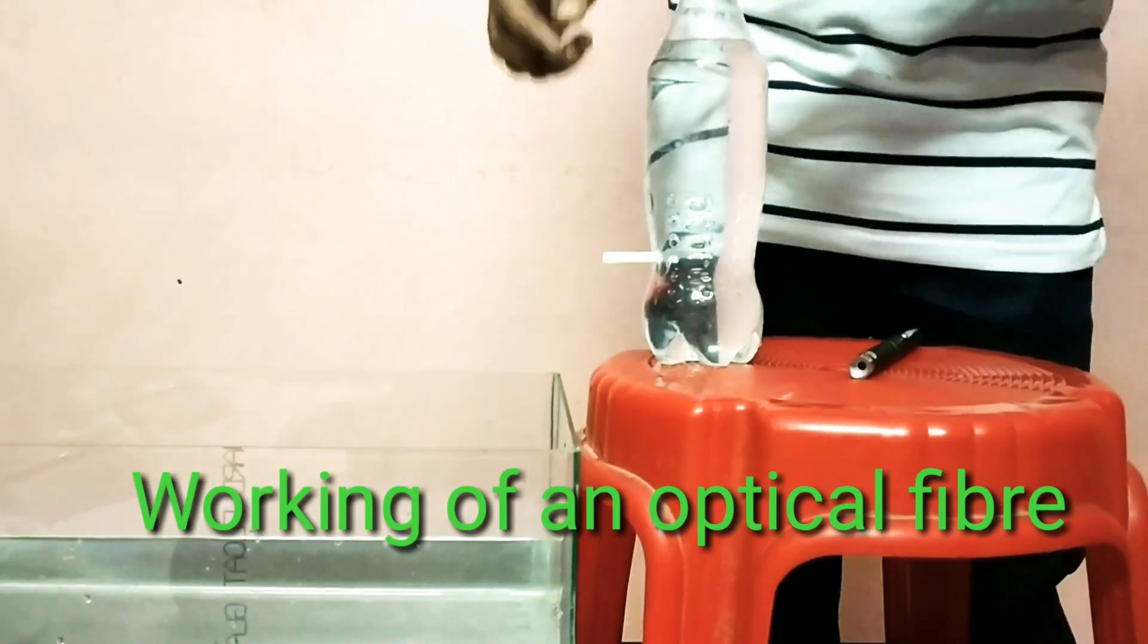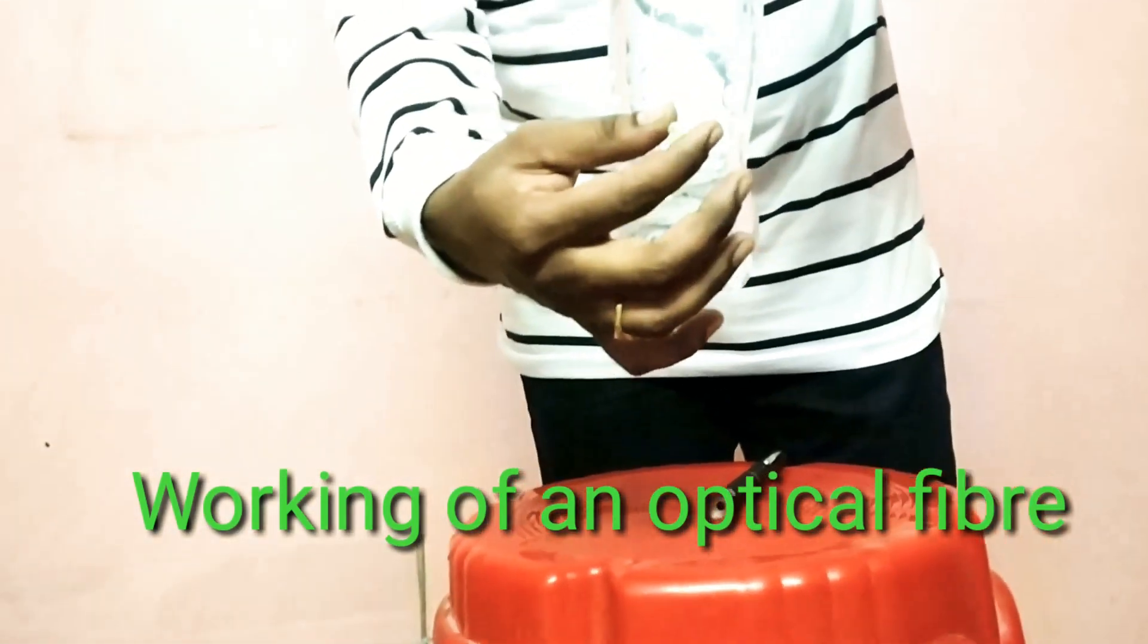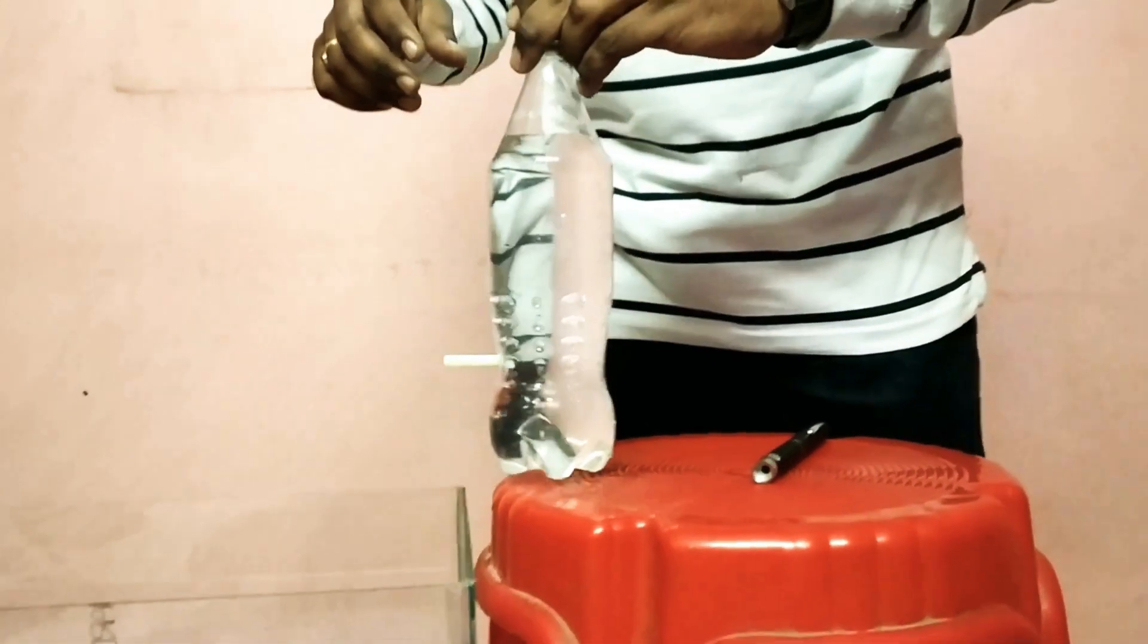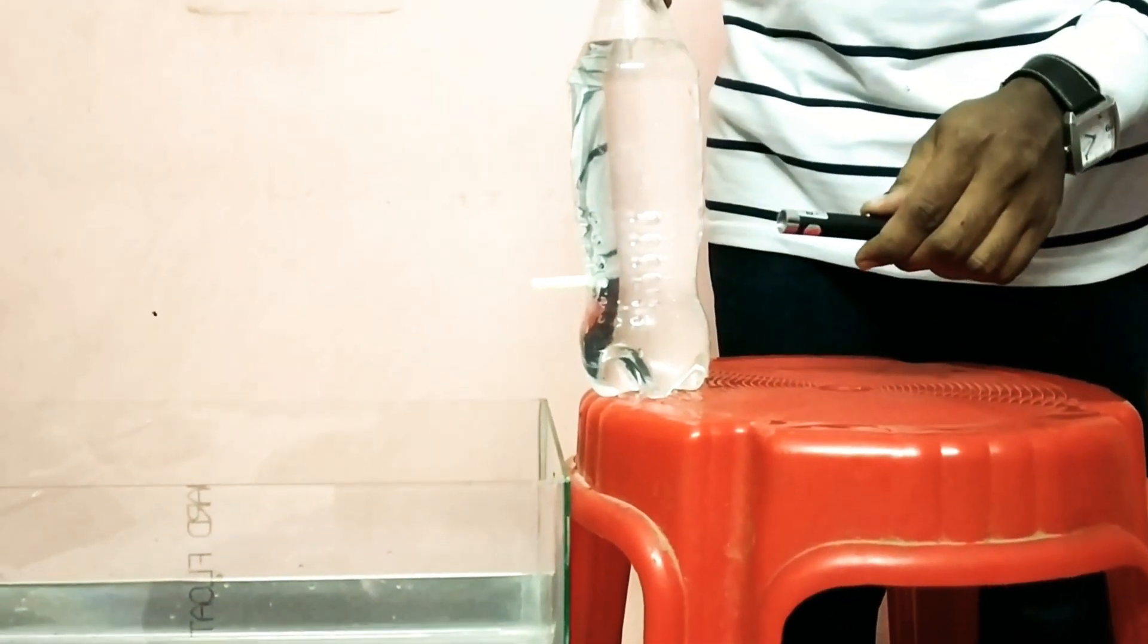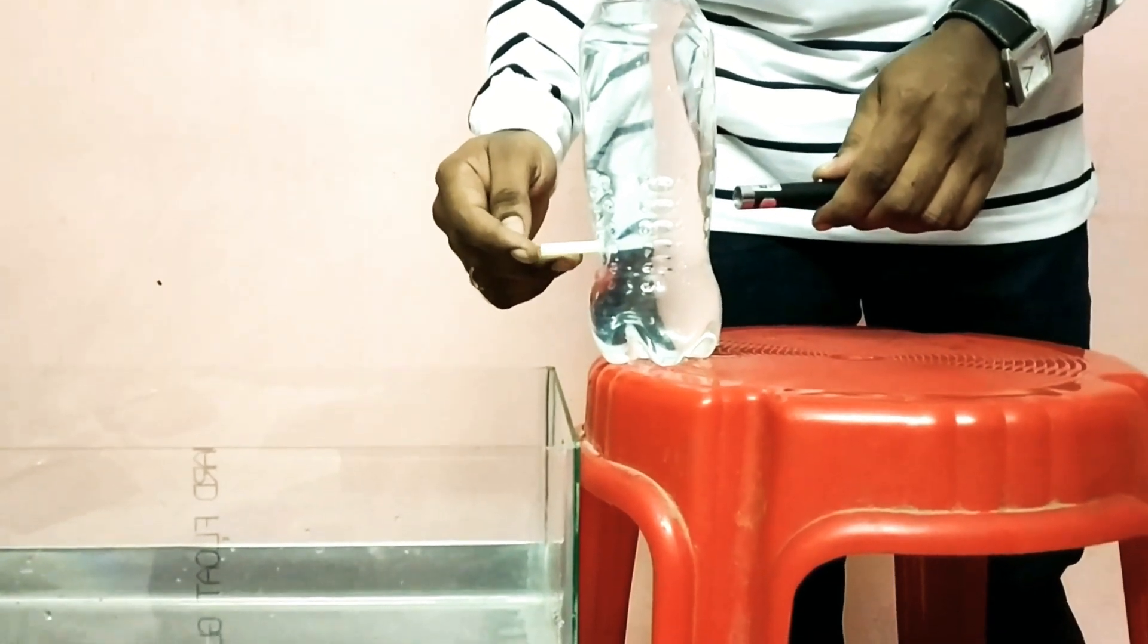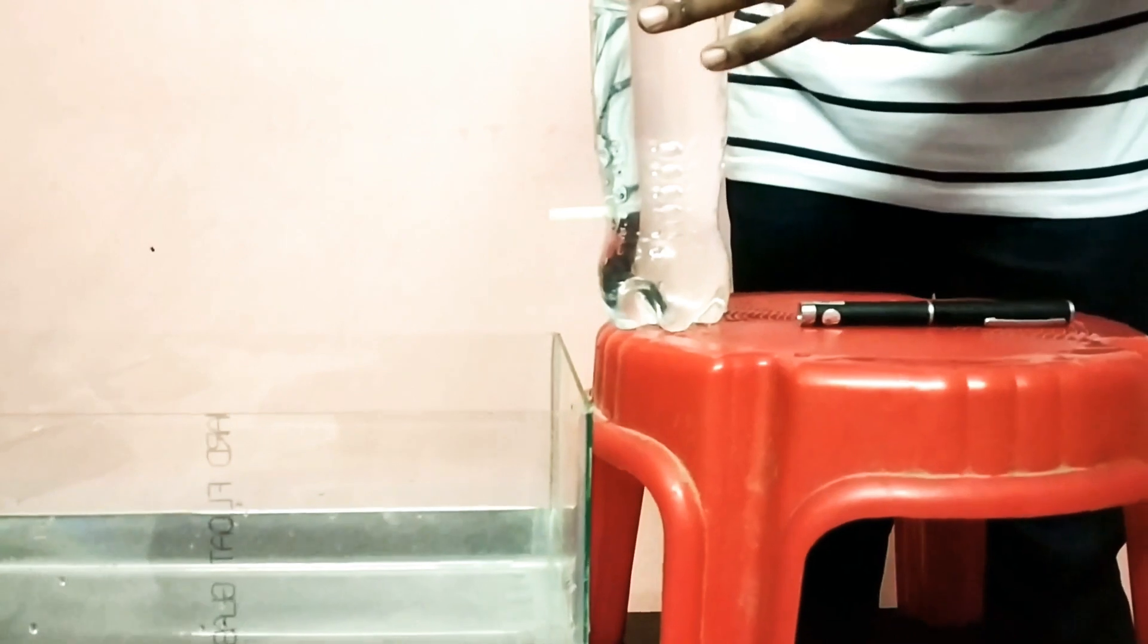For that, we need one bottle. I made one hole in it and inserted one straw and sealed it with glue. Now focus the laser pointer. After opening the cap, you can see the total internal reflection that is happening in the stream of water that comes out of it. Let me open this cap.